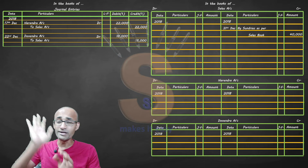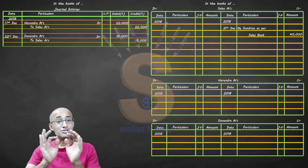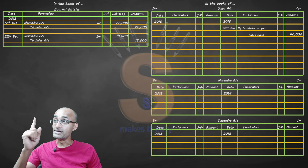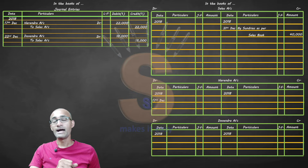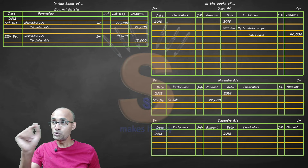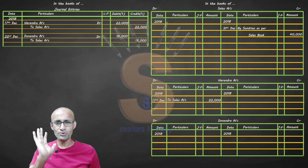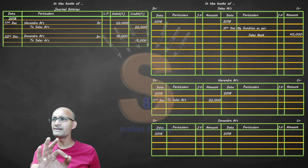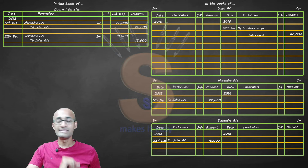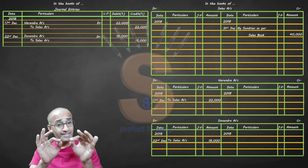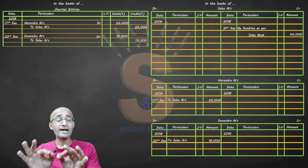Because we journaled at the top, on the debit side we have Narendra's account: on December 17th, 'To Sales — 22,000.' Similarly, on the debit side for December 22nd, Devendra's account shows 'To Sales — 18,000.' It is simple to prepare these customer accounts.